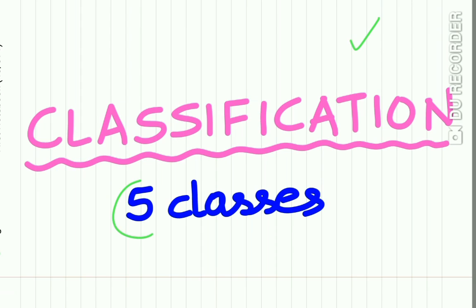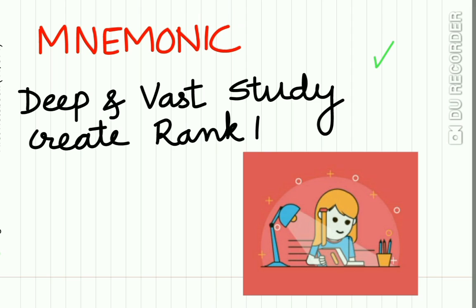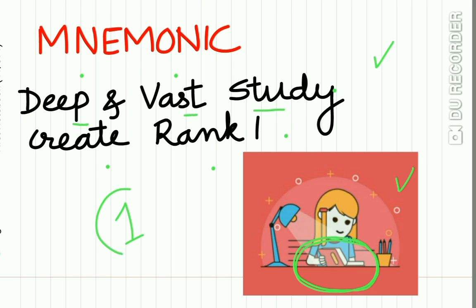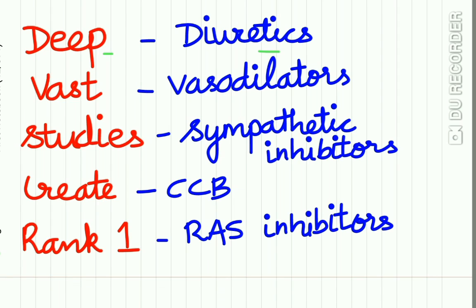There are five classes of anti-hypertensive drugs. A visual mnemonic to remember these is: 'Deep and Vast Studies Create Rank One.' Deep stands for Diuretics, Vast for Vasodilators, Studies for Sympathetic inhibitors, Create for Calcium channel blockers, and Rank One for RAS inhibitors.